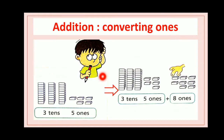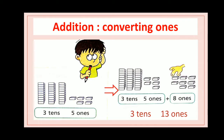This is Adil. He has 35 blocks, which means 3 tens and 5 ones. Now he adds 8 more blocks — 8 ones. Now he has 3 tens and 13 ones. But 13 is greater than 9, so we cannot write 13 in the ones column.